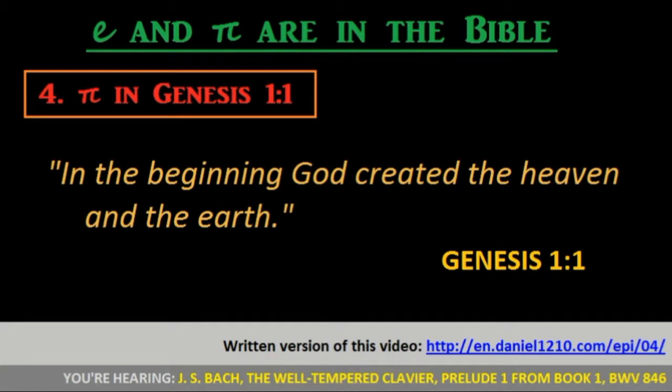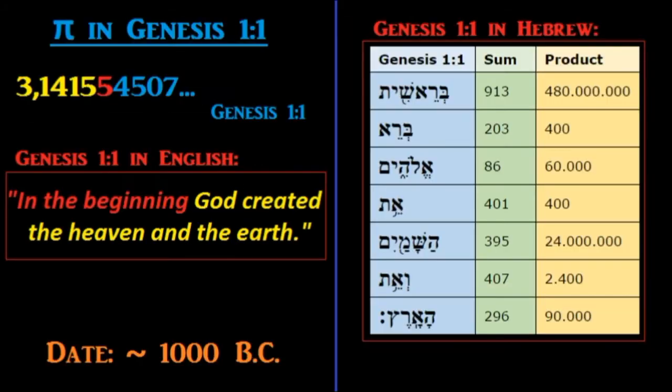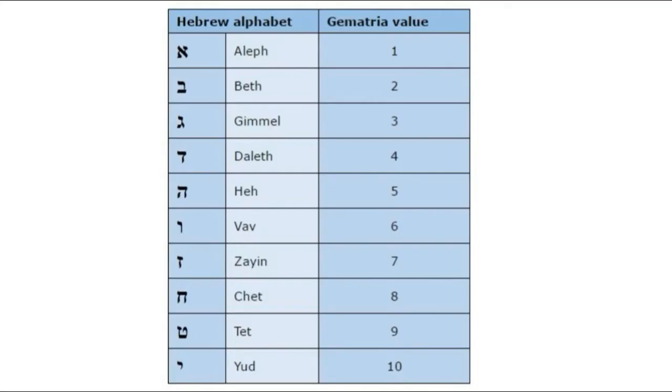Let's start with the computations to see how Pi is encoded in Genesis 1:1. Genesis is written in Hebrew, so let's record the gematria table for the Hebrew alphabet.